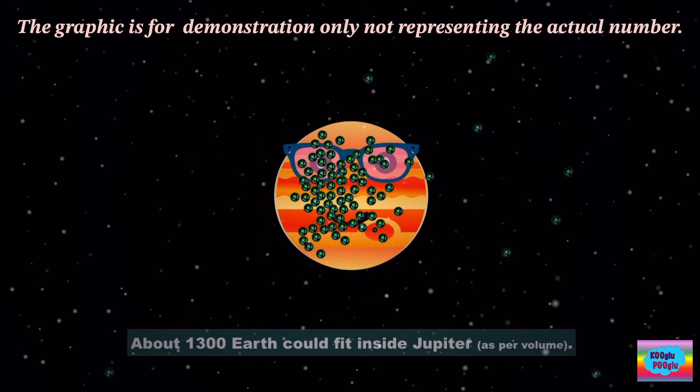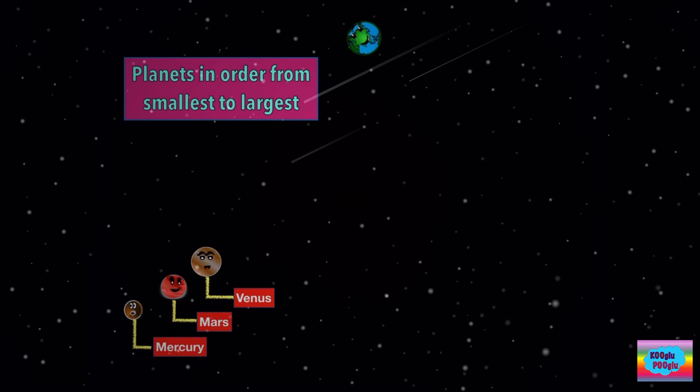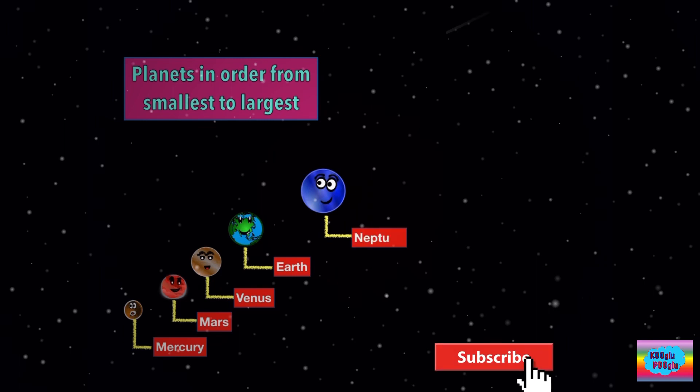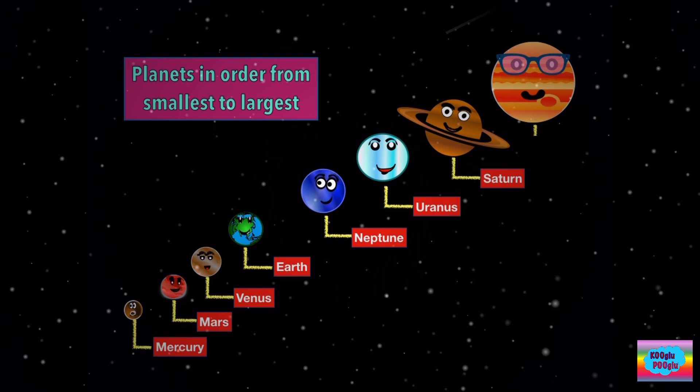Now let's see our planets smallest to largest in order. Here we got Mercury, Mars, Venus, Earth, Neptune, Uranus, Saturn, and Jupiter.